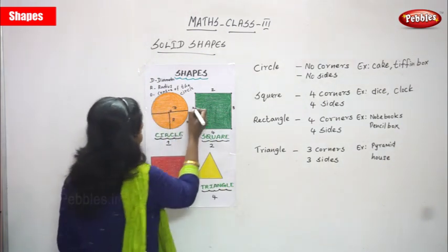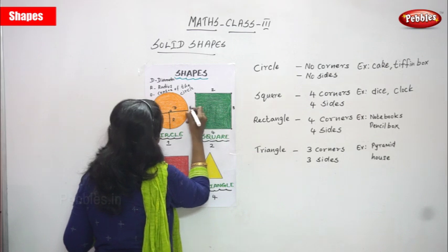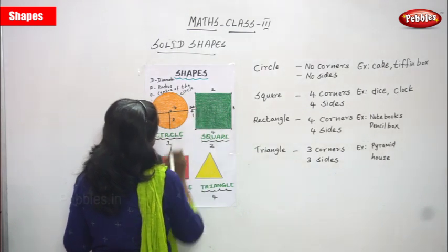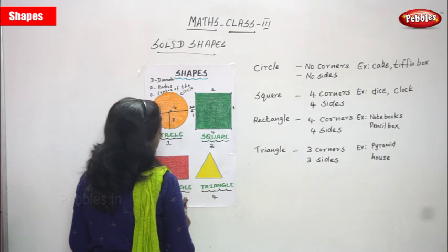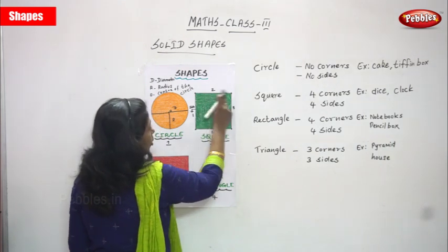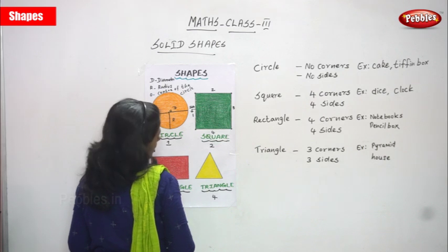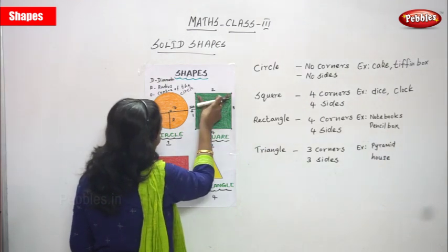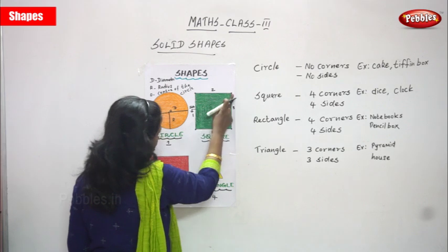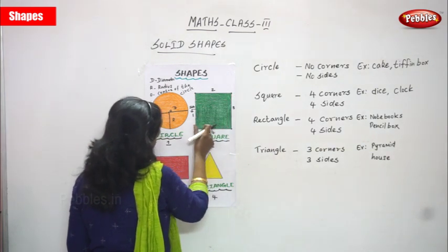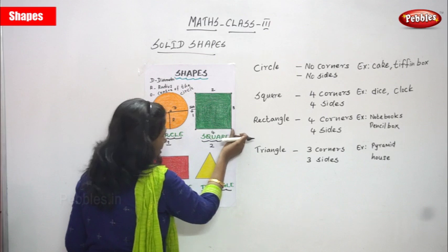This is called a side. Now, for the square, all four sides are equal. For example, if this side is 5 cm, then this side is also 5 cm, this side also 5 cm, and this side also 5 cm.